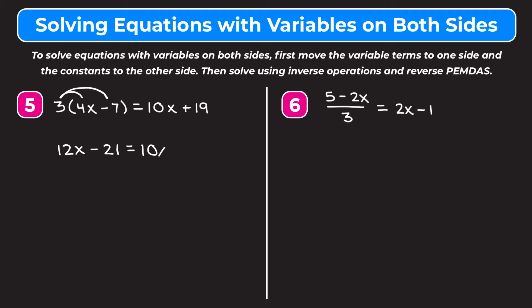So I have 12x minus 21 on the left side and I keep 10x plus 19 on the right as is since I can't combine those. Now I need to get the variable terms to one side, so I'm going to move the 10x from the right to the left by subtracting 10x from both sides. On the left, 12x minus 10x is 2x, giving me 2x minus 21. On the right, 10x minus 10x is 0, leaving just positive 19.